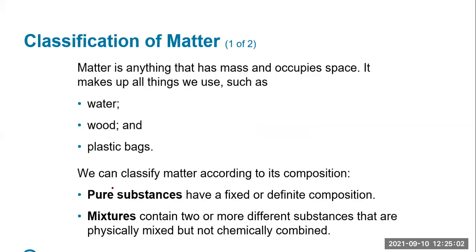Matter basically occupies space and makes up pretty much everything that we use — water, wood, air, plastic bags. We can classify matter according to its composition. We can have something that's a pure substance, and a pure substance is something that has a fixed or definite composition. For example, if you had water by itself, H2O, that is a pure substance — you have just water, nothing else there.